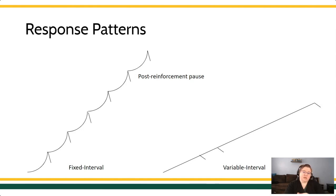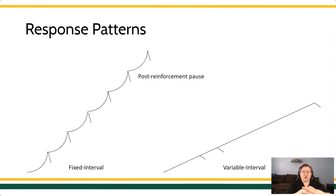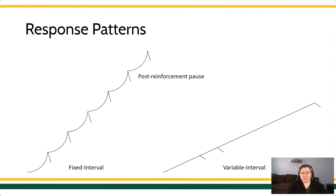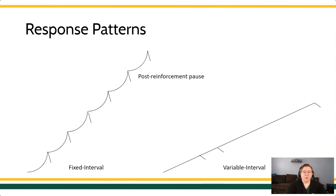A variable interval schedule, just like the variable ratio schedule, produces a very consistent and smooth pattern of responding — very consistent, very robust. The thing about a variable interval schedule is because it's so unpredictable, so removed from each specific response that the learner emits, the variable interval schedule is the most resistant schedule of reinforcement to extinction. This schedule is going to continue to help the learner emit the response in the absence of very lean times. So if you want this behavior to maintain for a long time, use that variable interval schedule.